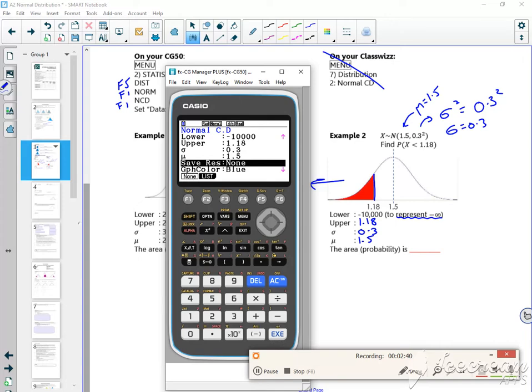Mu is around 1.5. Instead of just pressing execute here, if I press down and then press F6 for draw, it gives me a picture which looks the same, so that's okay. So that's 0.1431.